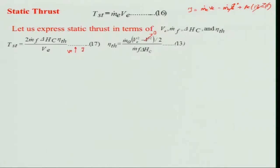This indicates that whenever the exit velocity goes on increasing, static thrust will go on decreasing — because V_e is in the denominator. Conversely, if exit velocity is lowered, static thrust increases. This is valid for a particular mass flow rate of fuel, a particular thermal efficiency, and a particular kind of fuel — keep this in mind.